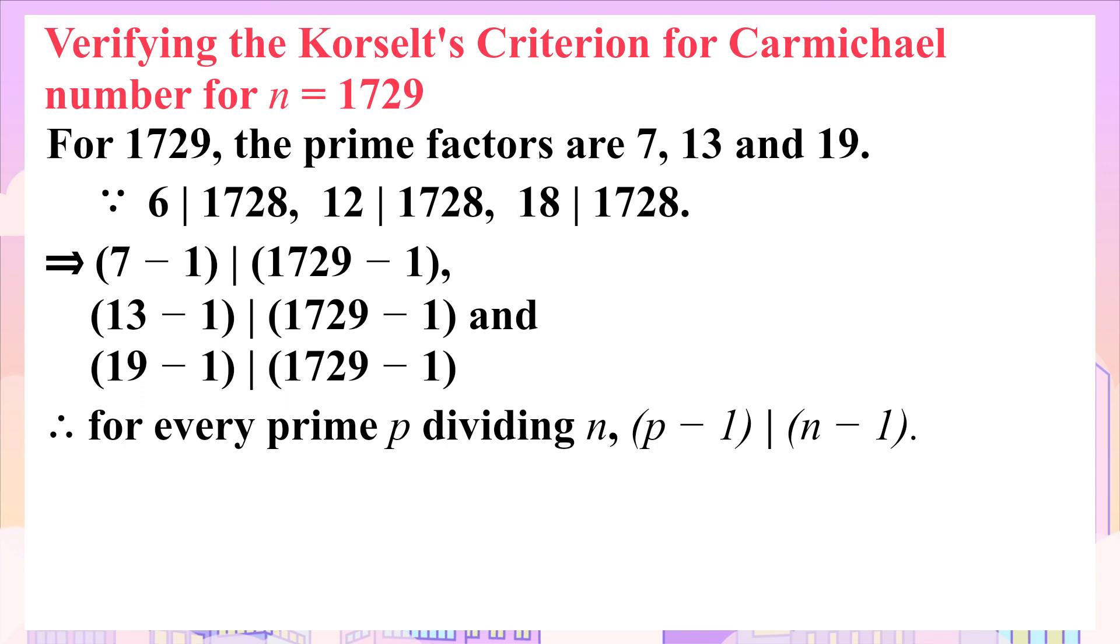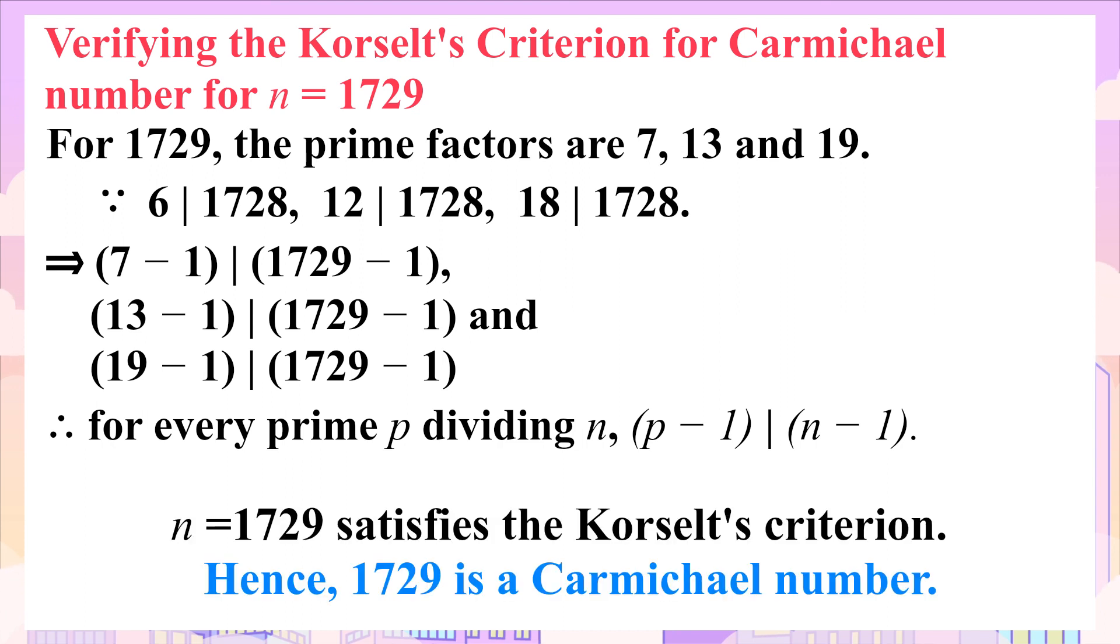For the second part of the criterion, we have the prime factors 7, 13, and 19. We see that 6, 12, and 18 divide 1728. That means for every prime p dividing n, p minus 1 divides n minus 1. This verifies the Korselt's criterion and again, 1729 is a Carmichael number.